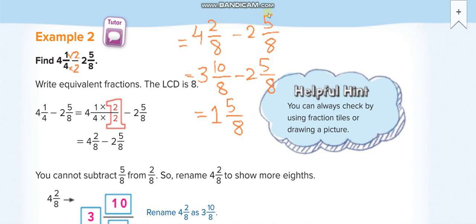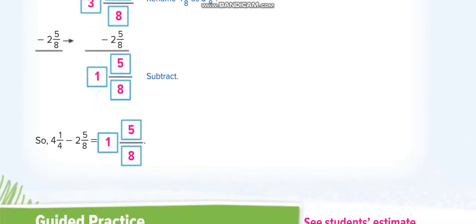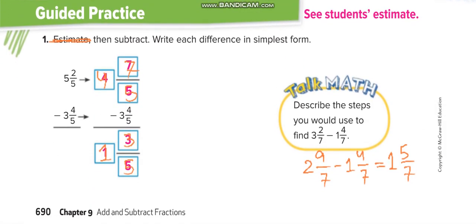Since we cannot subtract, we take a carry from the 4, making it 3. As I explained in the last lesson, when you take a carry from the whole number, you add the denominator to the numerator. So 4 becomes 3, and 8 plus 2 gives us 10 over 8. Then we subtract: 3 minus 2 equals 1 whole, and 10 minus 5 equals 5 over 8. We cannot simplify it, so the answer is 1 and 5 over 8.